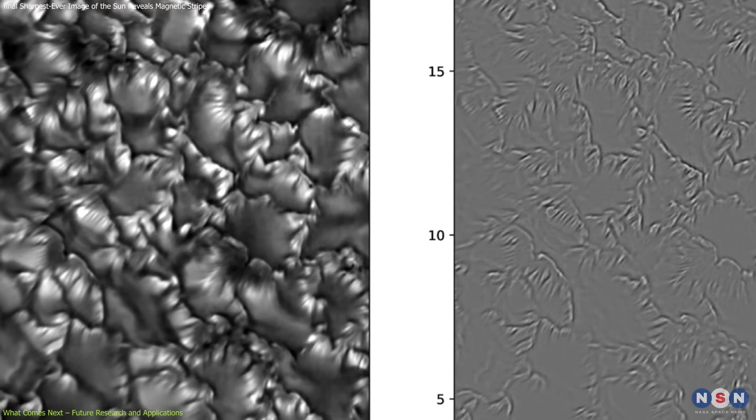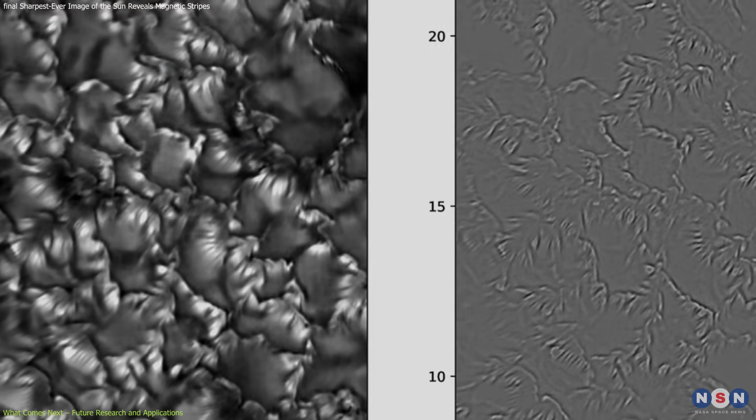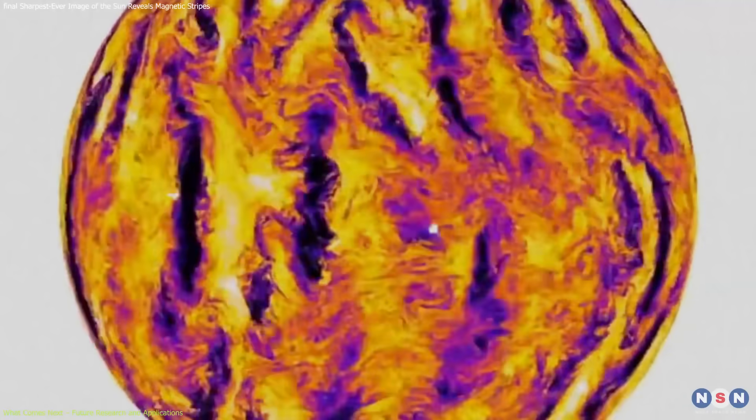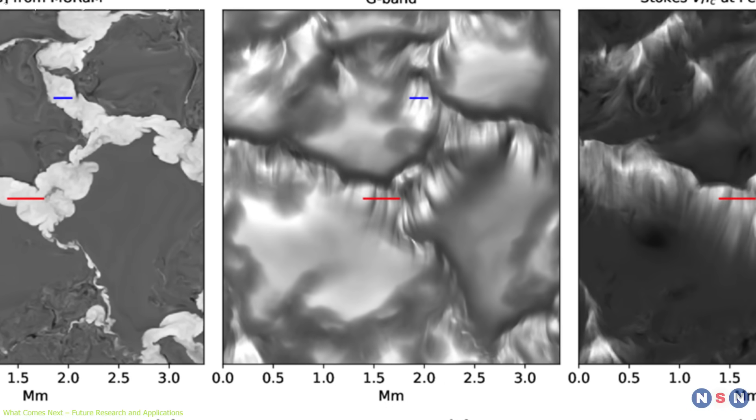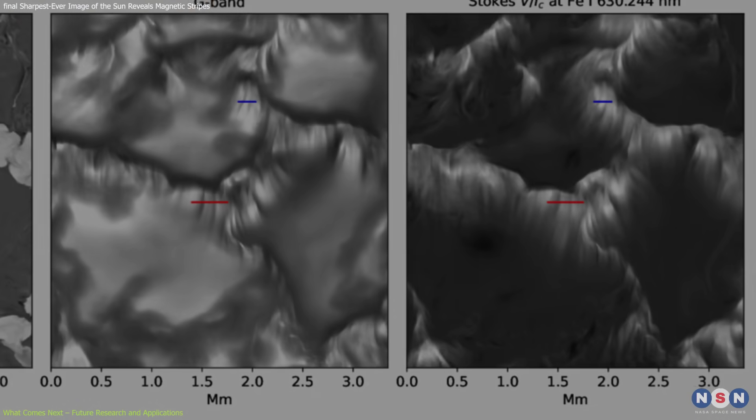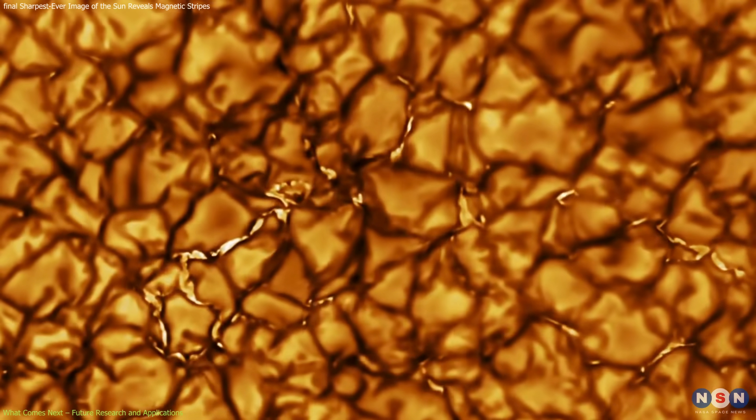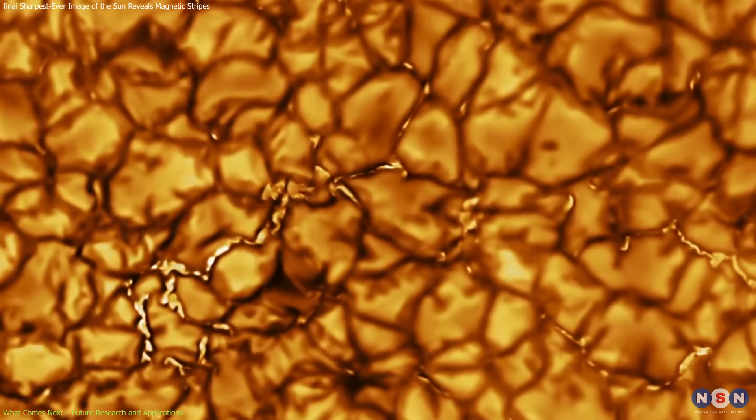From a modeling perspective, these high-resolution observations feed directly into the refinement of solar simulations. Now that we've confirmed the presence of small-scale magnetic structures, future models must account for their formation, evolution, and interaction with larger systems.